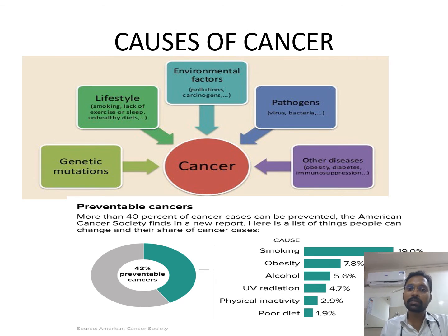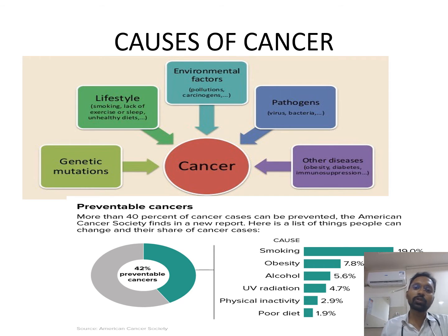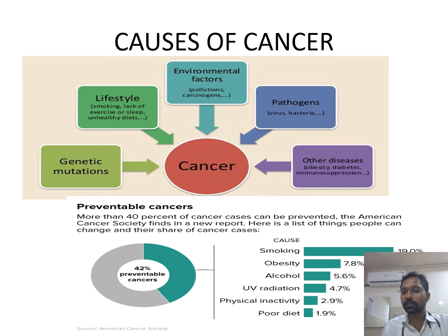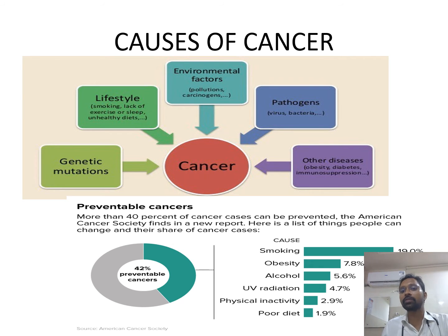Other diseases like diabetes, obesity, and any immunosuppressing diseases that suppress immunity will also lead to causes of cancers. Among all these etiologies, almost more than 40% of cases are actually due to some preventable causes. These include smoking, which causes almost 19% of cancers, obesity, alcohol use, UV radiation, physical inactivity, and poor diet — all of which are preventable.